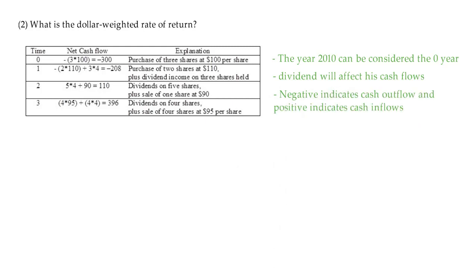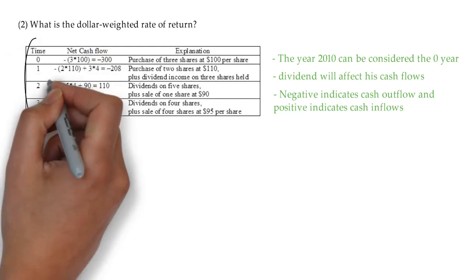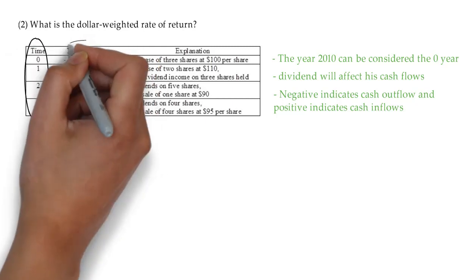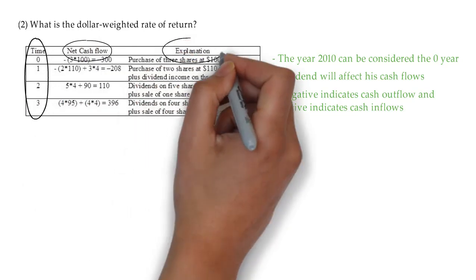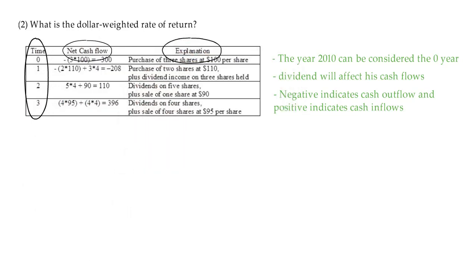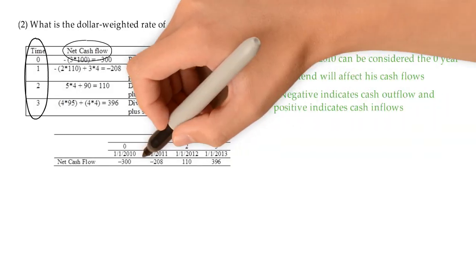In the table, the first column says time. The second column shows how you can calculate the cash flows and the third column explains what it means. Once you have these four cash flows ready in four different time periods 0, 1, 2, and 3, you can put these cash flows in a timeline.